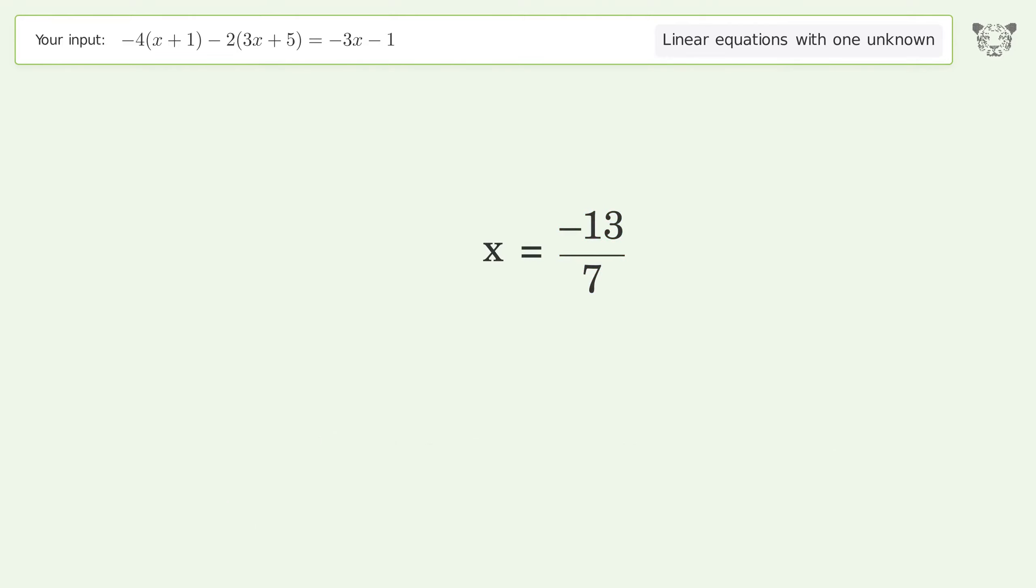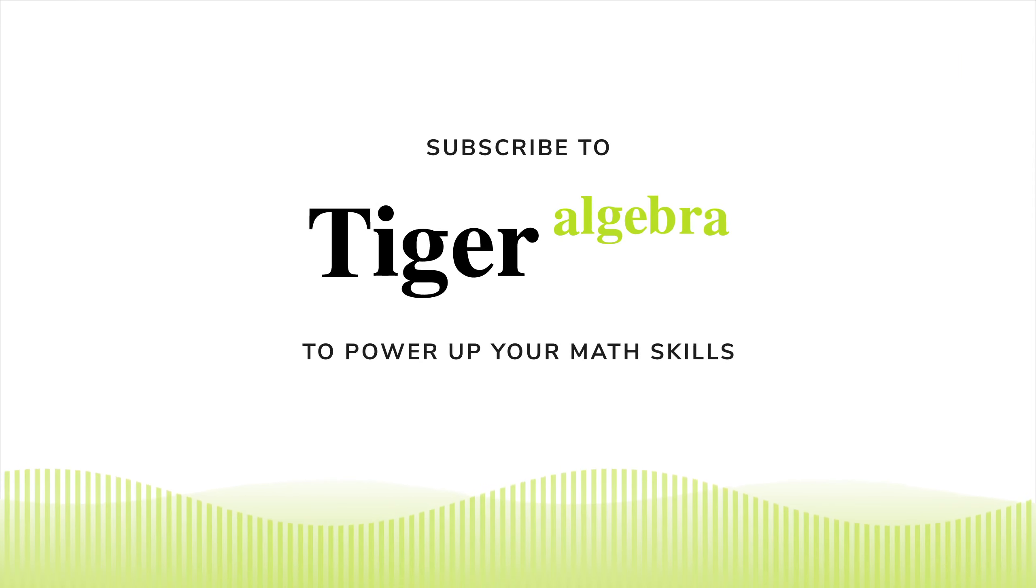And so the final result is x equals negative 13 over 7.